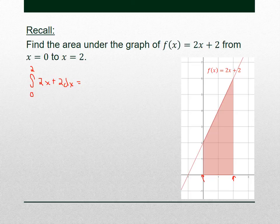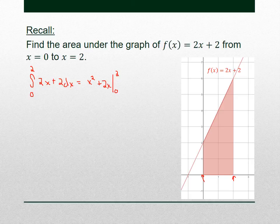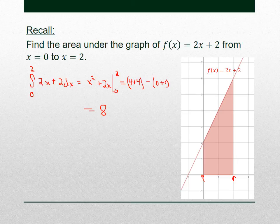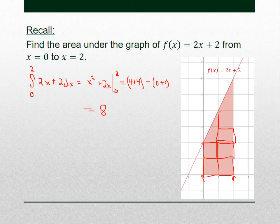Take the antiderivative, you get x² + 2x, and we're going to evaluate that from 0 to 2. When you plug in 2, you get 4 + 4; when you plug in 0, you get 0, so that is 8. The area of this shaded region is 8. You could count that out — there are boxes and triangles that add up to 8.